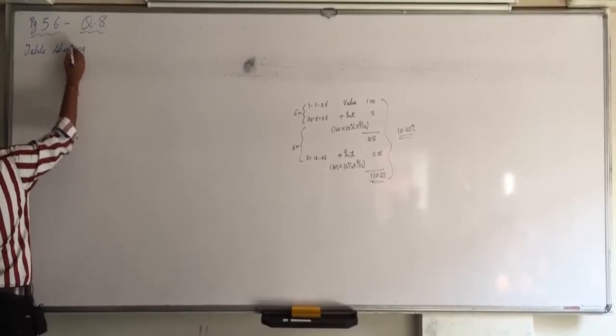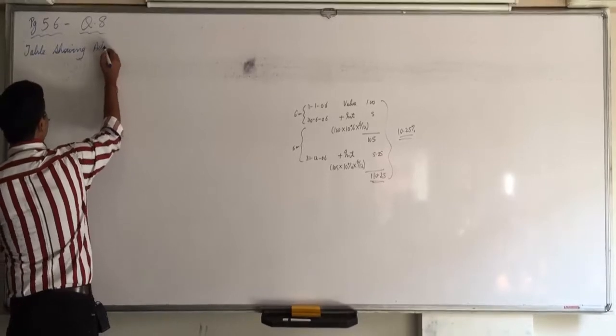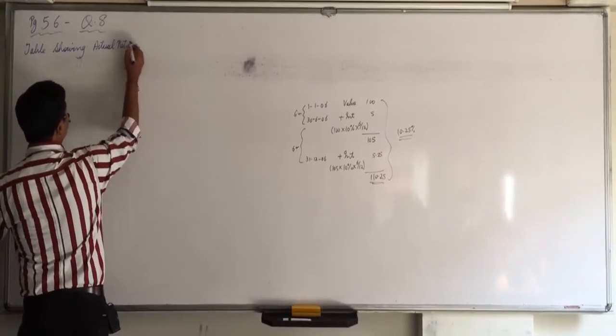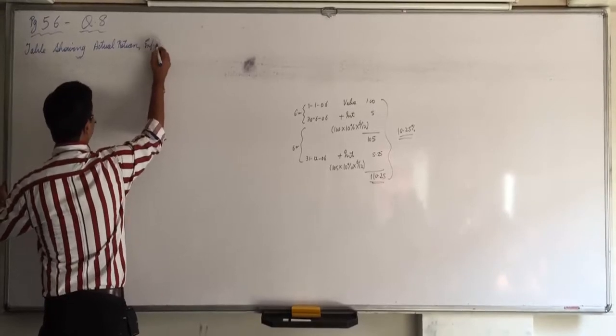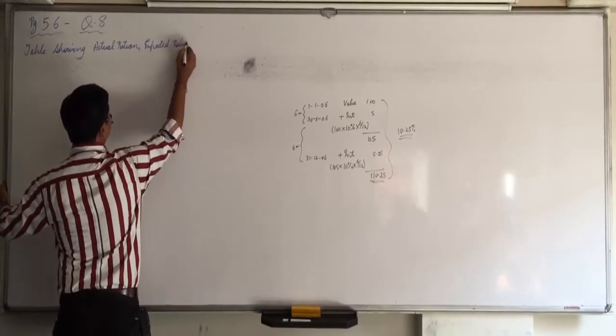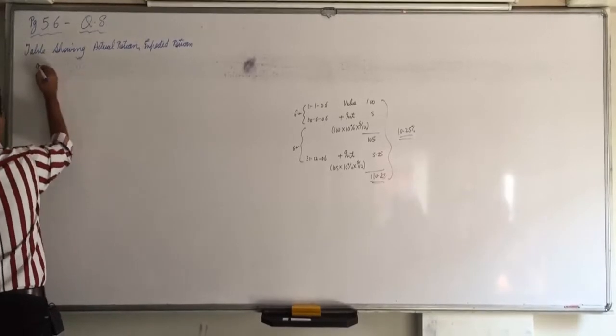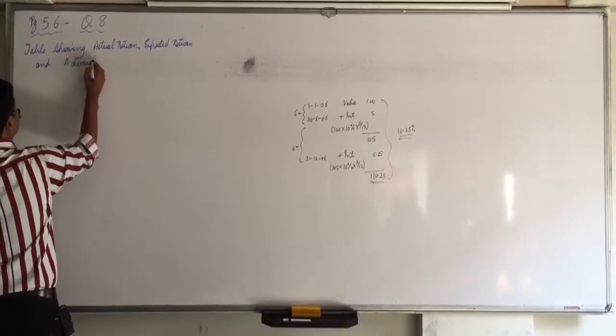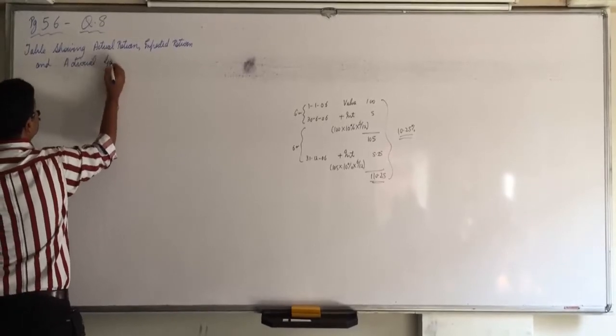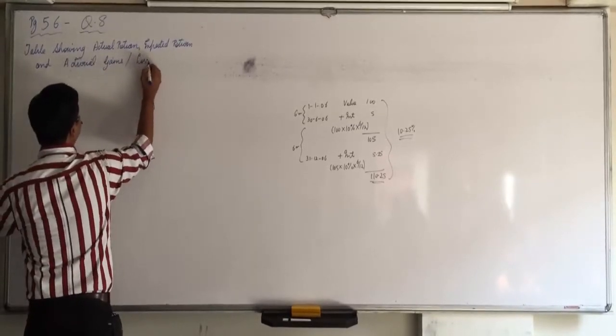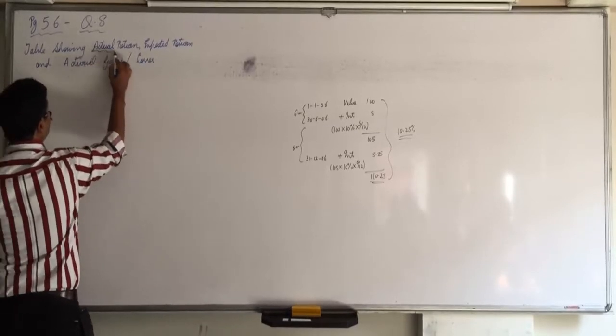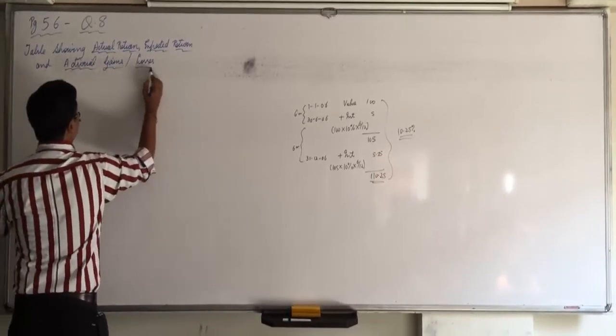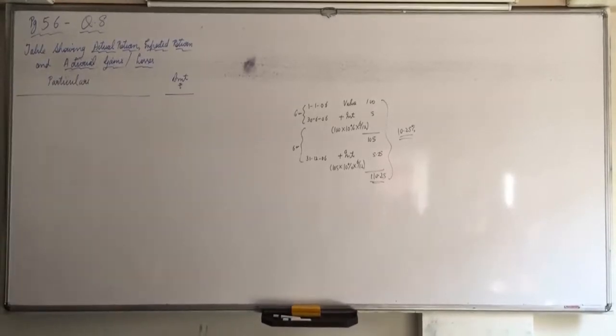Calculate the expected and actual return on plan assets for the year ended 31-2006. And also calculate actual gains and losses to be recognized in the statement of profit and loss account. So let us make the same table what we discussed yesterday. You can give the table showing three things: actual return which is also called actuarial return, expected return, and actuarial gains or losses.